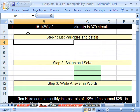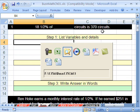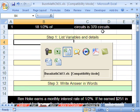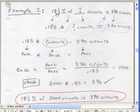Now here's our first example: 18 1/2% of blank circuits is 370 circuits. As we saw earlier studying this formula, this can directly translate into English. Here's 18 1/2%, when you get a decimal it goes straight to that. Of means multiply.